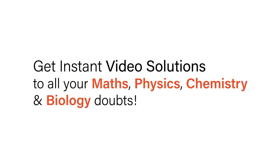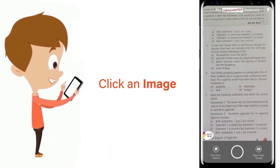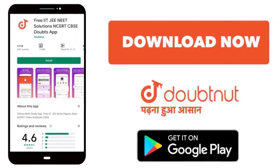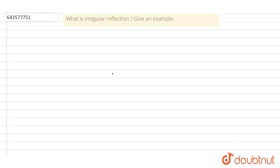With Doubtnet, get instant video solutions to all your maths, physics, chemistry, and biology doubts. Just click the image of the question, crop the question, and get instant video solution. Download Doubtnet app today. Hello everyone, the question is: What is irregular reflection? Give an example.